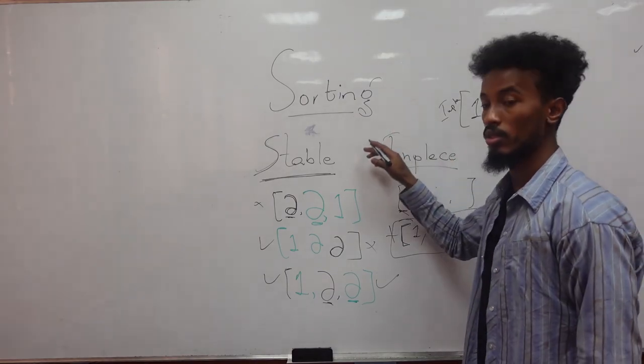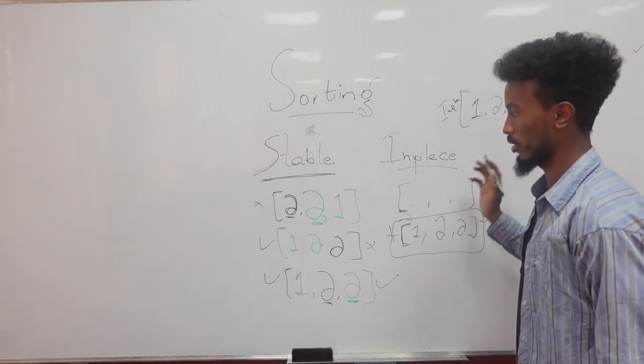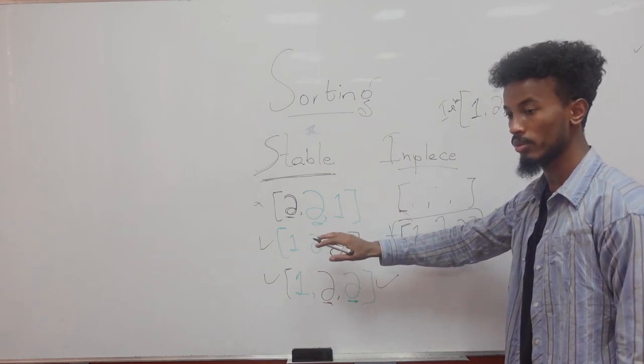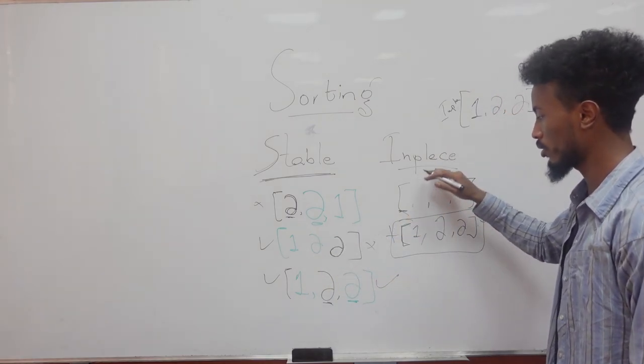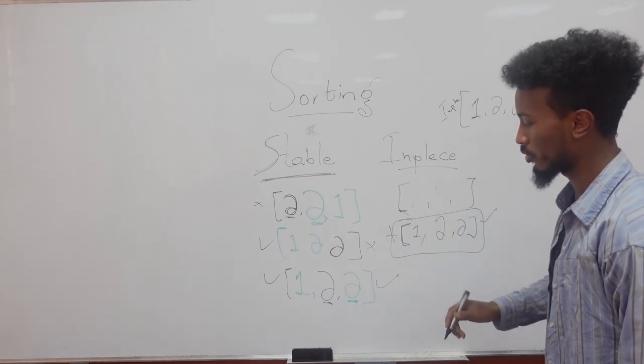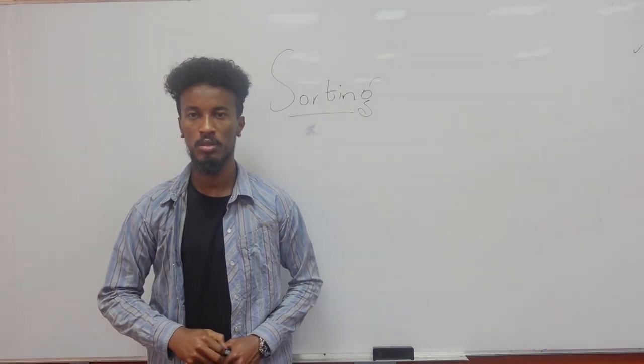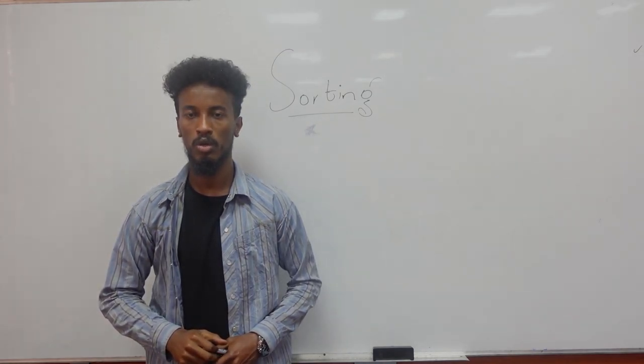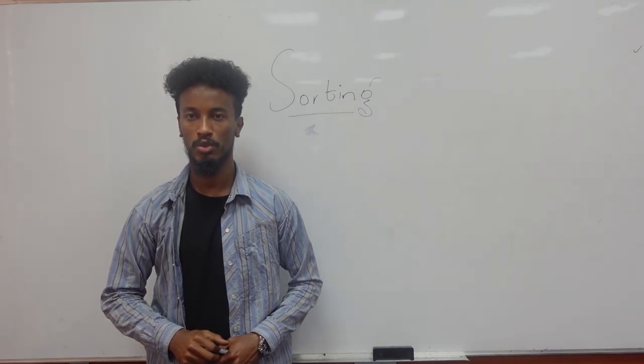And this is what in-place means in a nutshell. Stability always talks about the order of identical items. In-place always talks about using extra memory for a given sorting algorithm. Thank you for listening. This is a short recap on sorting. And next, we will talk about different basic types of sortings.